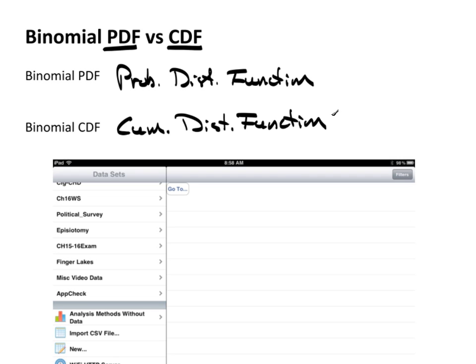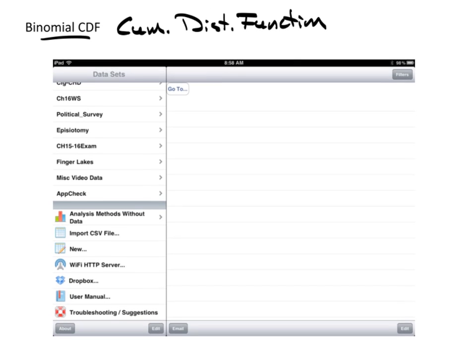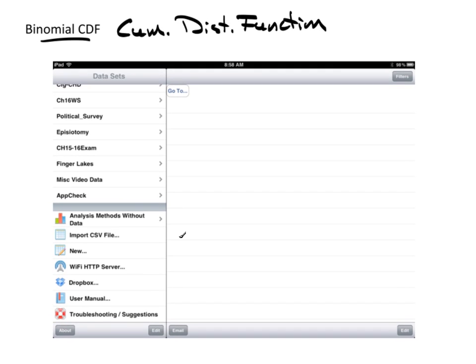Depending on the technology used, like a TI-83, 84 from Texas Instruments has both a PDF and a CDF command. Most technologies will specify one way or the other for the PDF and the CDF. Now, in TC Stats, the way it's done is this is an example of what was currently on my TC Stats when I opened it up. To get to the binomial, all you have to do is select on analysis methods without data, because we don't use data for a binomial.